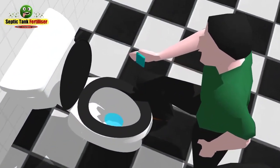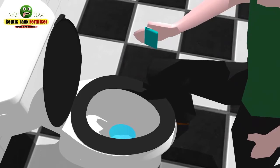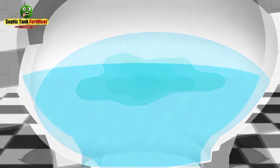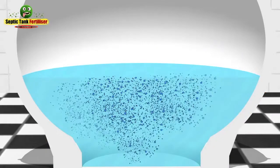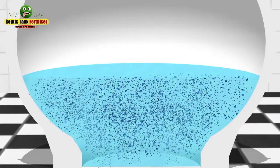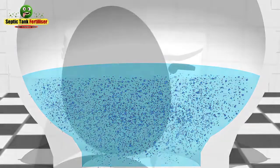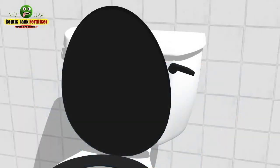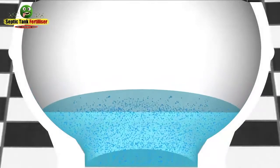So, how do you get septic tank fertilizer into your septic tank? Well, it's really easy. Simply drop one of the water-soluble sachets into the toilet and let it dissolve, which generally takes about 30 seconds. As it dissolves, it will release billions of organic bacteria and enzymes into the water. Once it's dissolved, then simply just flush the loo.